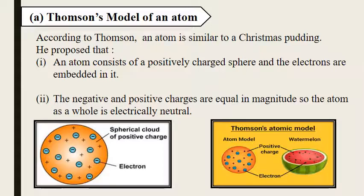Next we have Thomson's model of atom. First of all, according to Thomson, an atom is similar to a Christmas pudding. He compared the model of atom with the Christmas pudding and also compared this atom with a watermelon. The seeds of watermelon show the electrons and the pulp shows the positive charge. So an atom consists of a positively charged sphere and electrons are embedded in it.